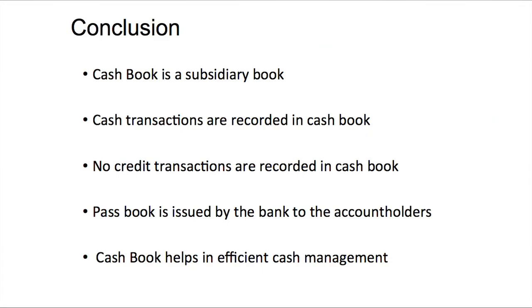So in this session we have mainly focused on what is cashbook. Cashbook is a subsidiary book; only cash transactions are recorded in cashbook and no credit transactions are recorded. Passbook is different from cashbook — passbook is maintained by the bank and given to the account holder by the bank. Cashbook helps in efficient cash management. Thank you learners. In the second session we will discuss certain practical aspects of cashbook. Thank you.